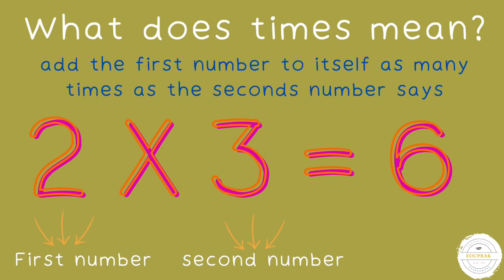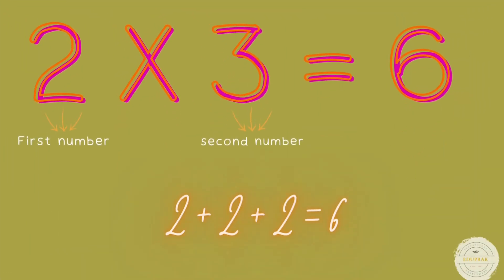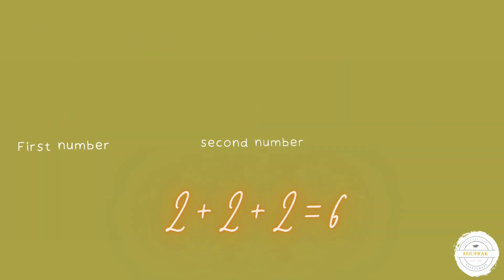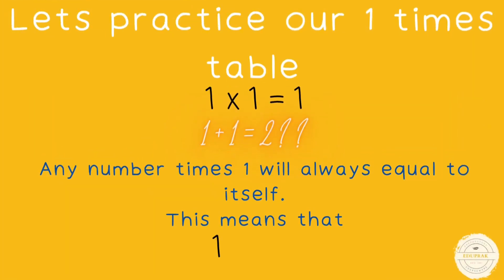Let's look at this here. Two times three equals six. Two is our first number and three is our second number, so two plus two plus two will equal six.